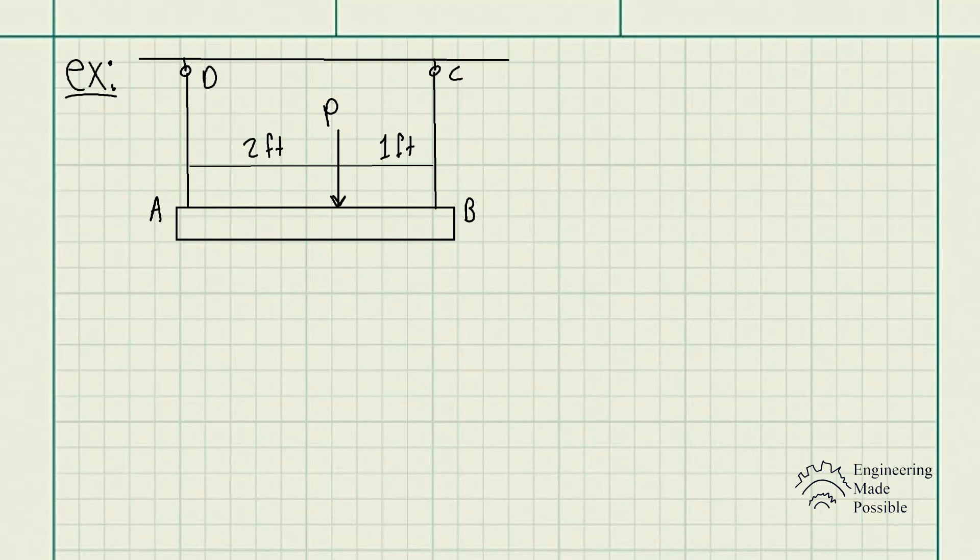So we're supposed to solve for the force P such that the beam tilts 0.015 degrees. When you're given problem statements, it's always a good idea to write down the givens. In this case we have the dimensions, the external load, as well as the length of each of the wires.